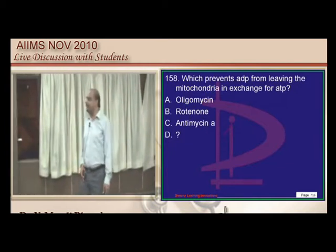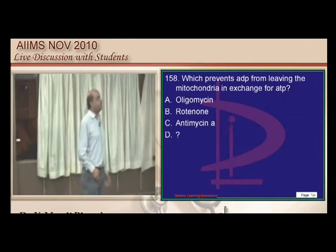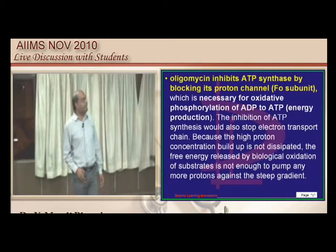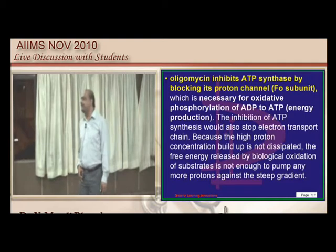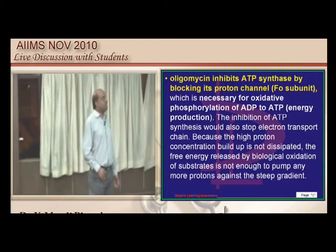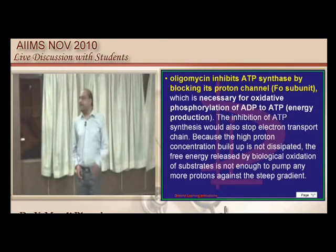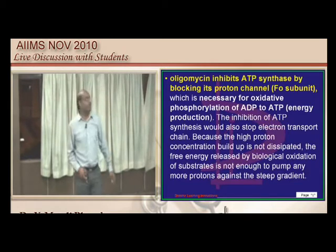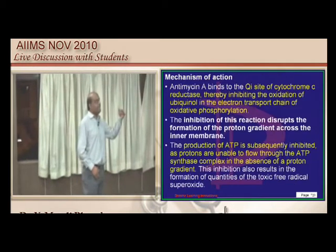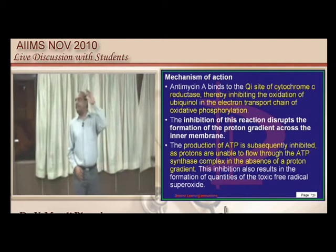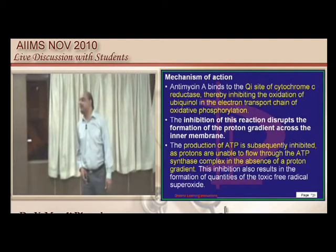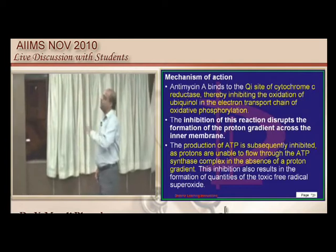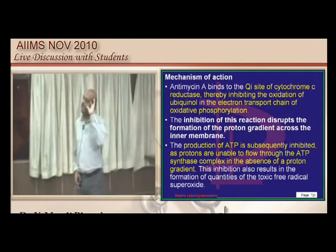What prevents ADP from leaving the mitochondria in exchange for ATP? Something like oligomycin inhibits ATP synthase by blocking its proton channel. The mechanism of rotenone is that it inhibits complex I (ubiquinone electron flow). Antimycin inhibits cytochrome c reductase. We should know the various electron transport chain poisons.